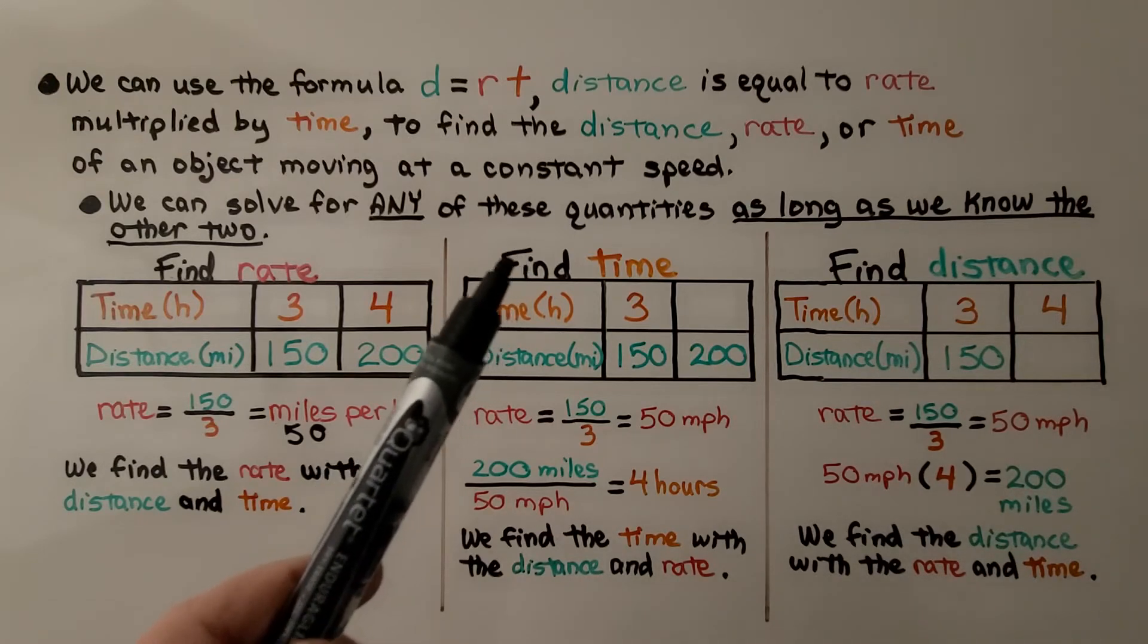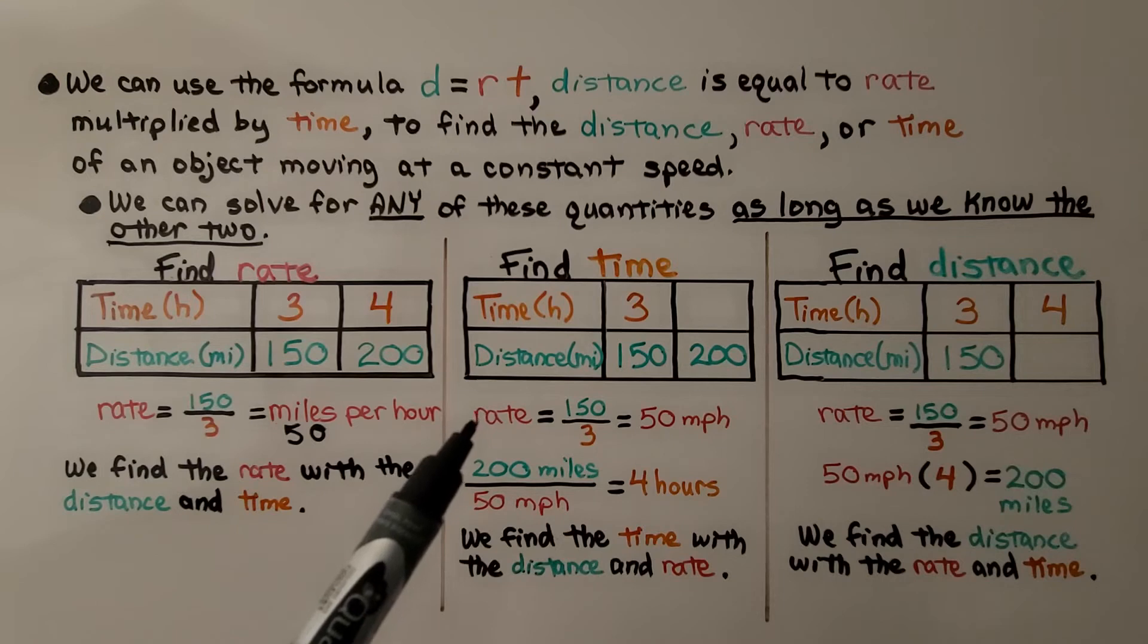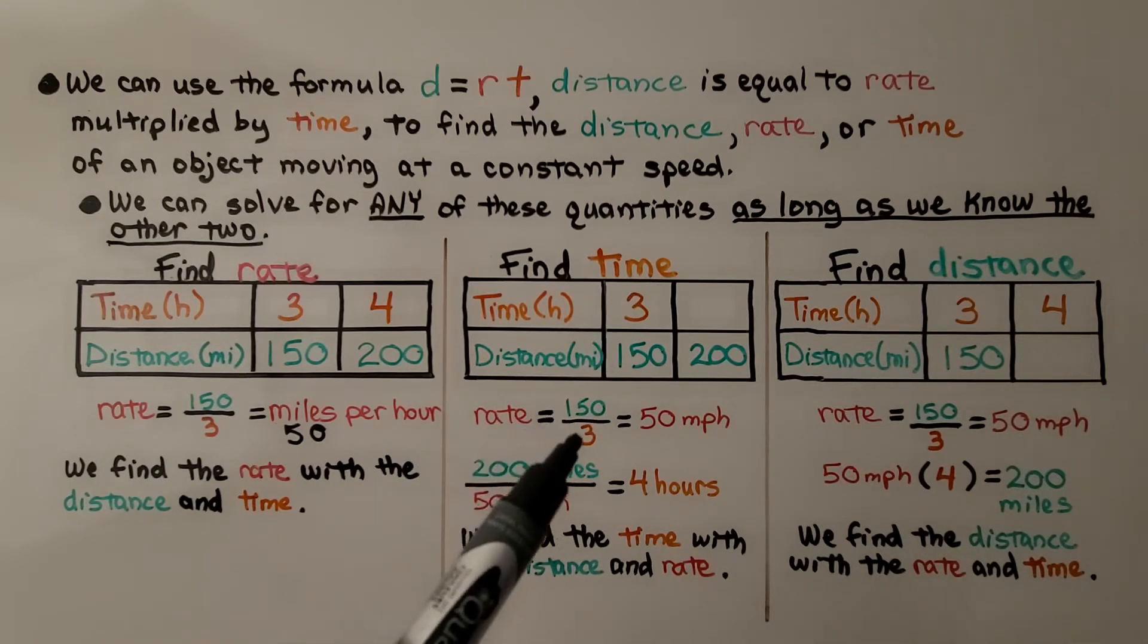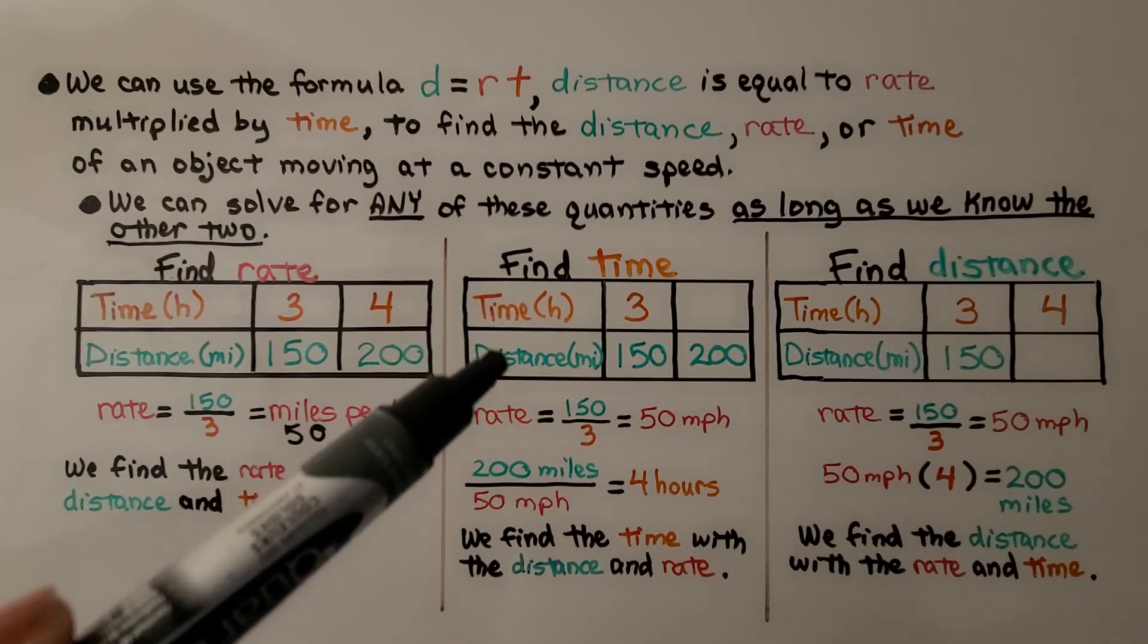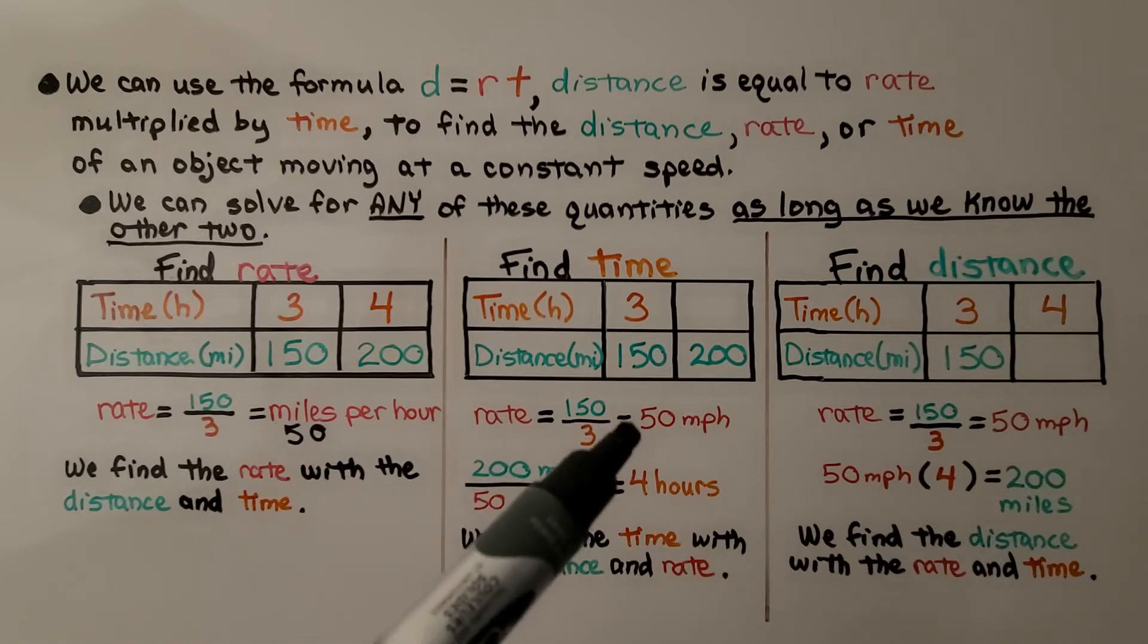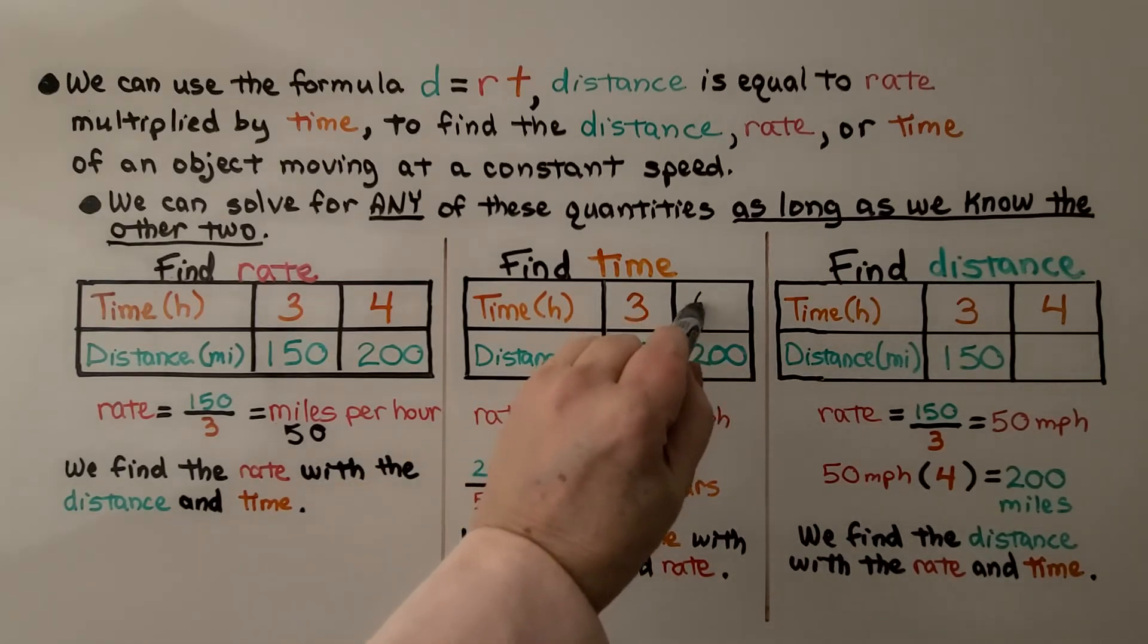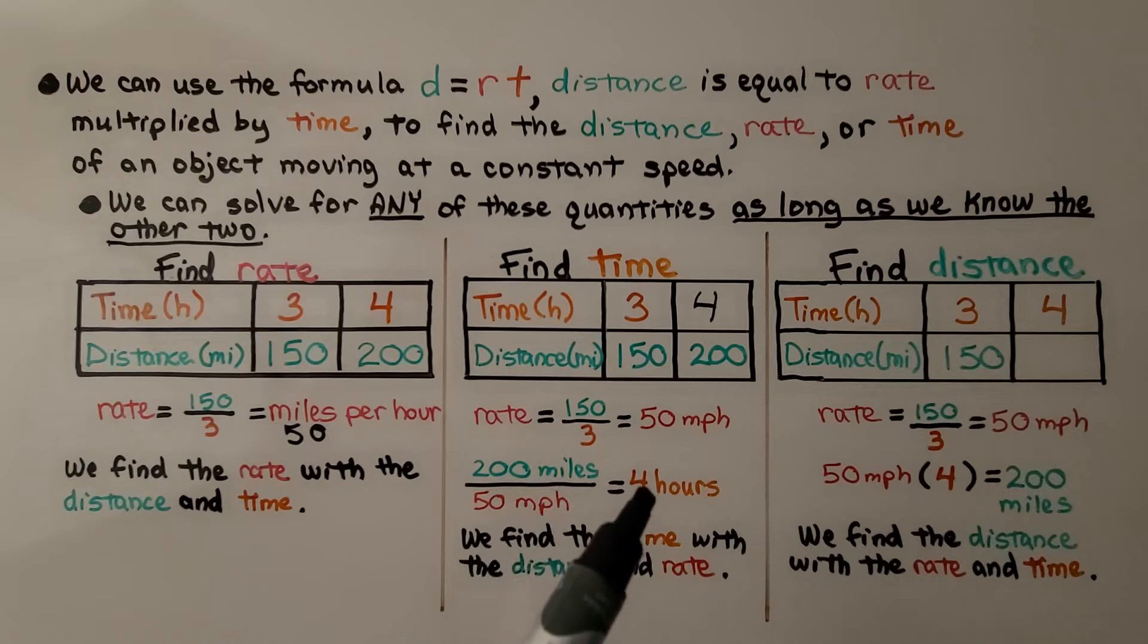To find the time, if we have a missing time in our table, we can find the rate from this information. It would be 150 divided by 3. That means we're looking for a time, and we have the distance and the rate, and get 4 hours to fit into our table. By knowing the rate and the distance, we were able to find the time.